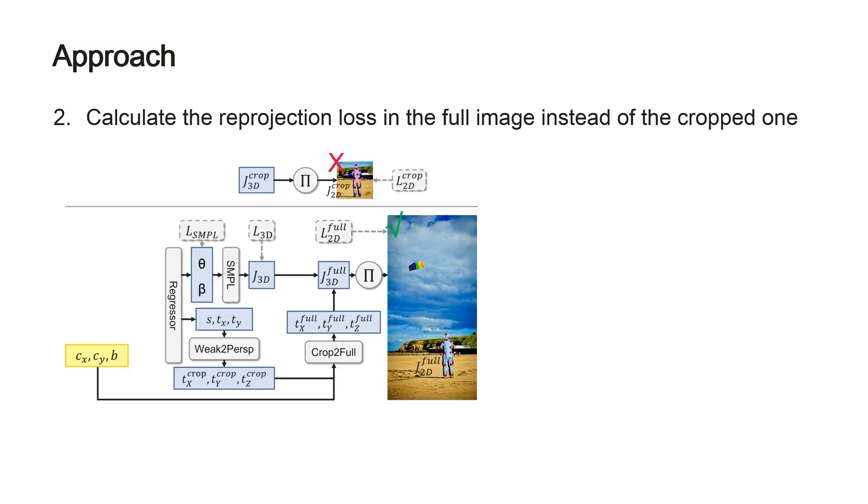Second, CLIFF calculates the reprojection loss in the full image instead of the cropped one. CLIFF predicts the human root translation in weak perspective projection parameters for the cropped image, then we transform it to the perspective projection parameters for the full image. This transformation is formulated as the cropped-to-full equation.